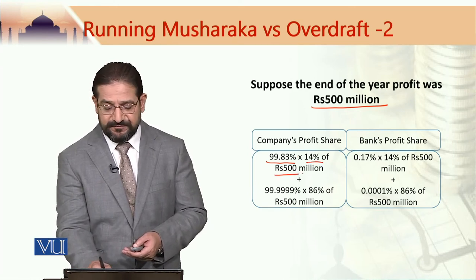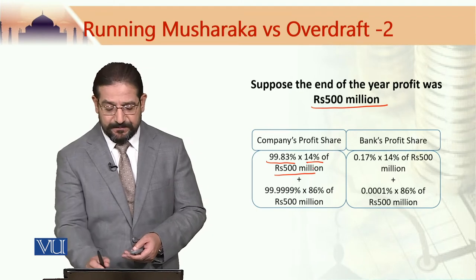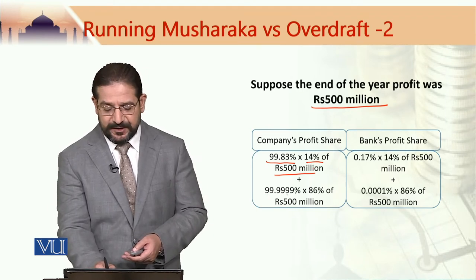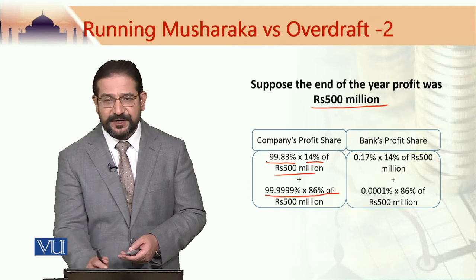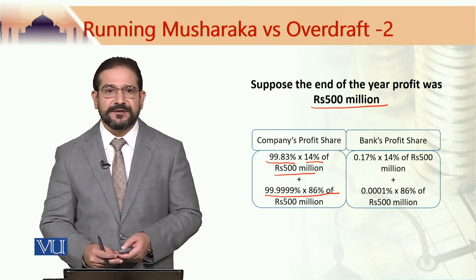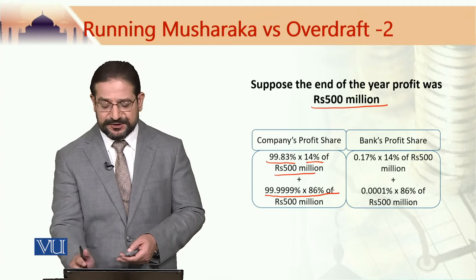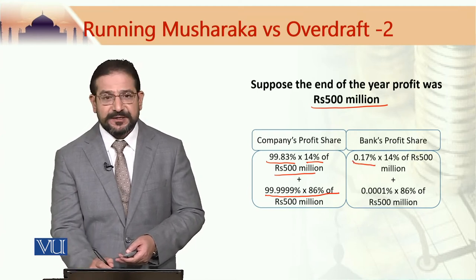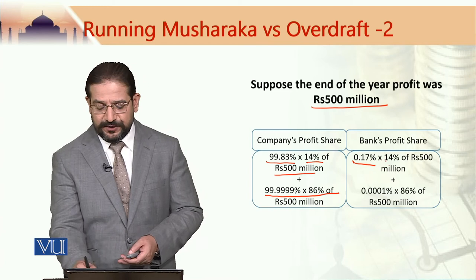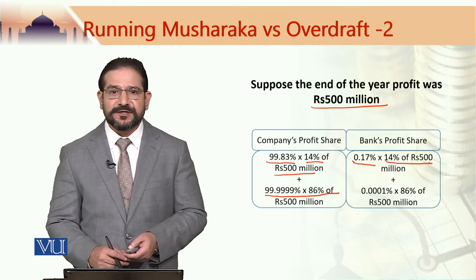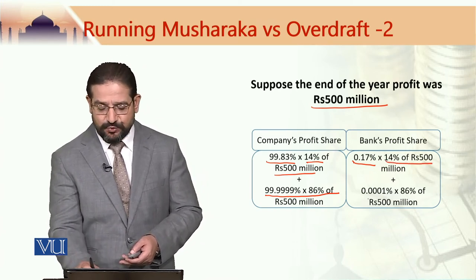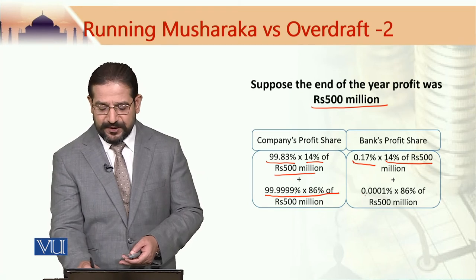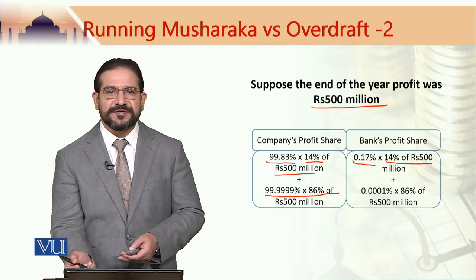We calculate: 14% of 500 million plus 99.999% multiplied with 86% of 500 million for the company's share. Similarly, the bank's share would be 0.17% multiplied with 14% of 500 million rupees, plus 0.00001% of 86% of 500 million.